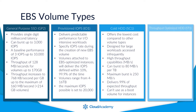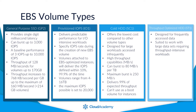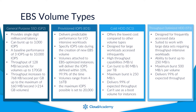Throughput Optimised HDD volumes are designed for frequently accessed data and are ideally suited for large datasets requiring throughput intensive workloads, such as data streaming, big data, and log processing. They have the ability to burst up to 250 megabytes per second, with a maximum burst of 500 megabytes per second per volume. They will deliver the expected throughput 99% of the time over a given year, and it's not possible to use these as boot volumes for your instances.